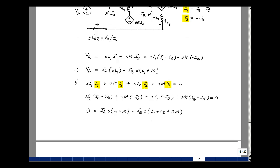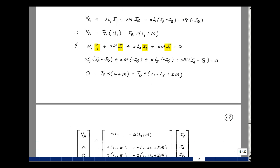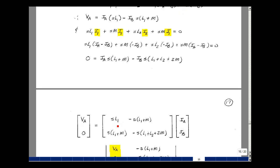So I have two equations of two unknowns. Could put that in matrix form. So V sub A is equal to SL1 times I sub A, and then minus S times the quantity L1 plus M times I sub B. Here's our second equation: the quantity S times L1 plus M times I sub A, and then minus I sub B times S and the quantity L1 plus L2 plus 2M.